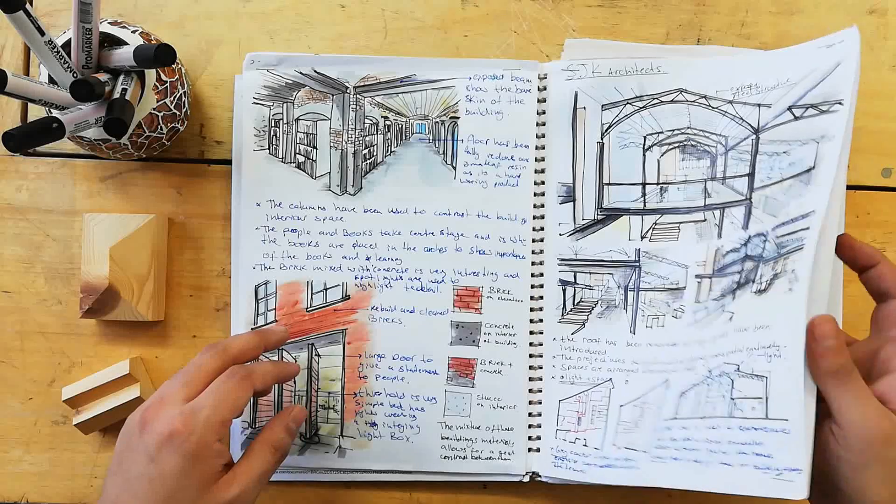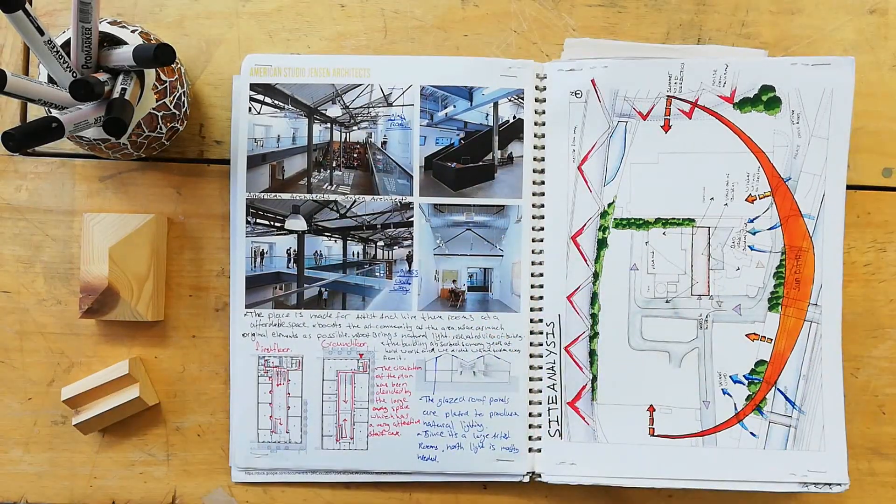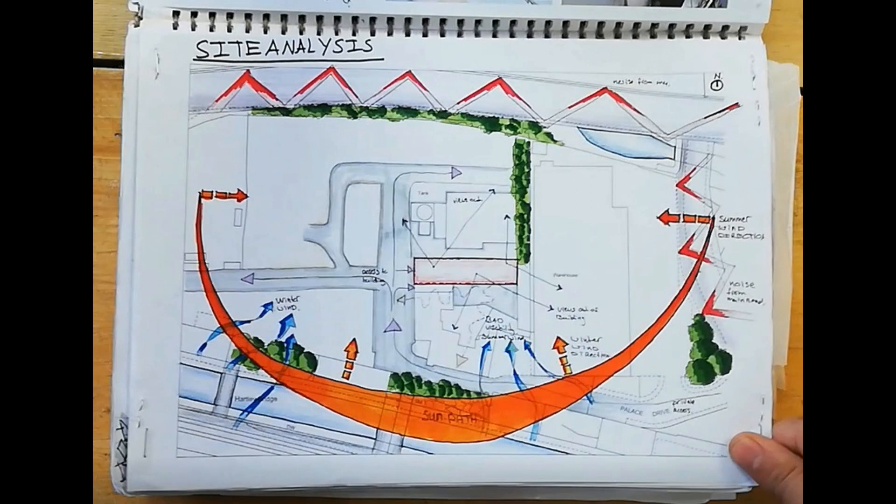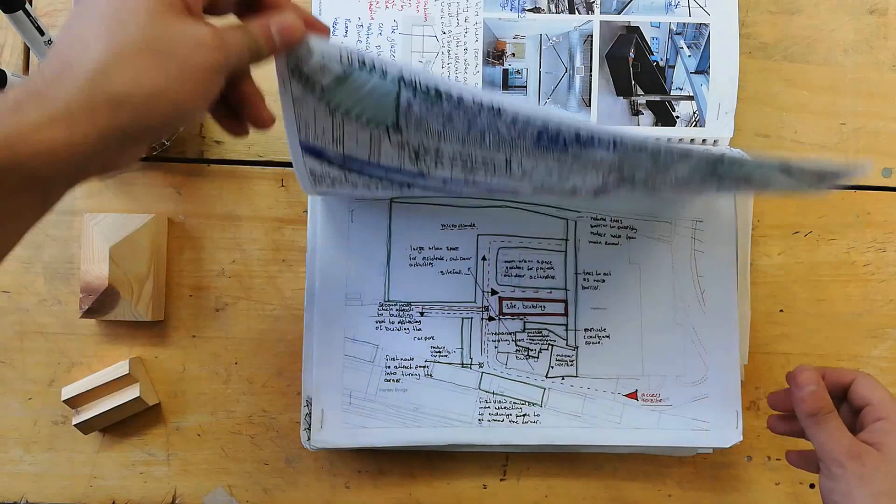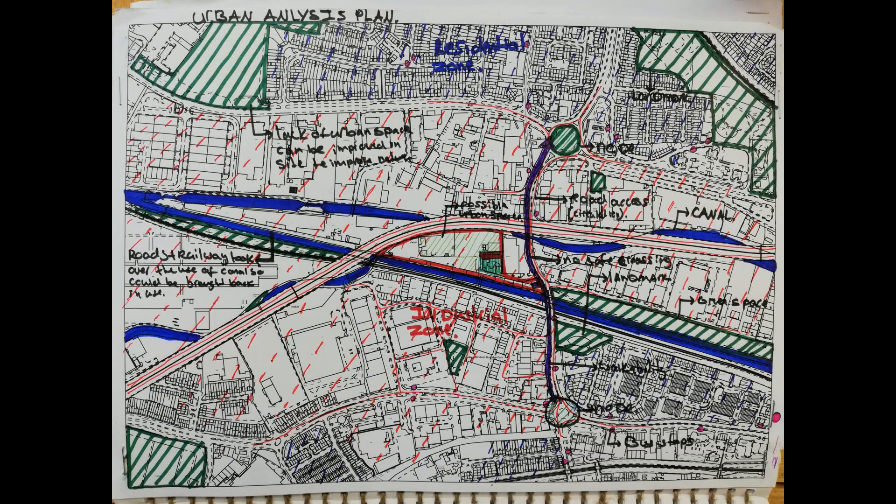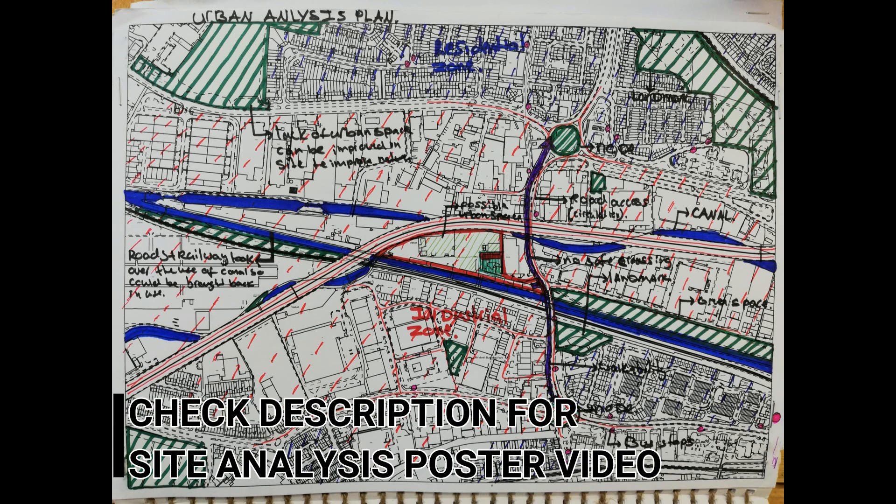For the site analysis, I just drew a large sun path showing the use of sunlight in the project. I added noise diagrams, wind and many more features. If you want to see how to do a site analysis, comment down below. And if you want to see a site analysis poster, make sure to watch my previous video, which I will have linked in the description down below.